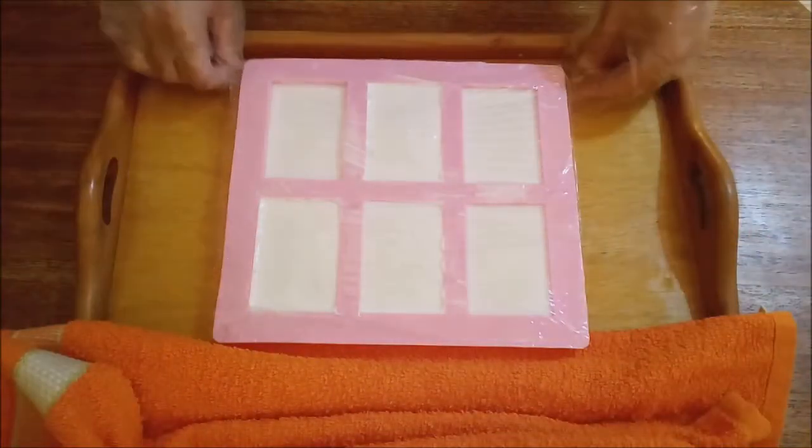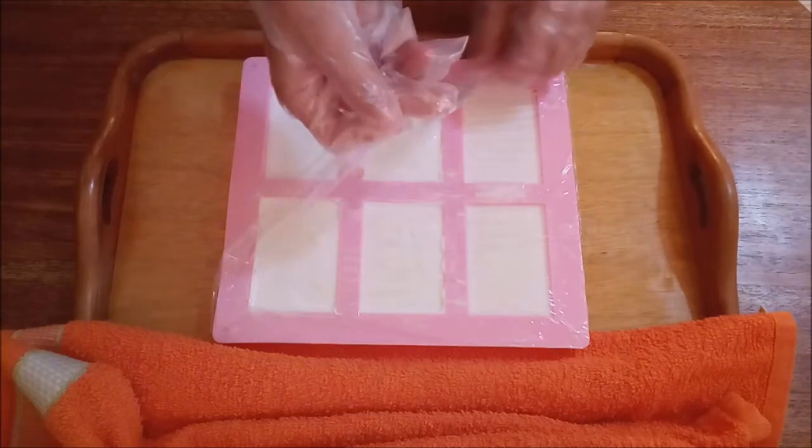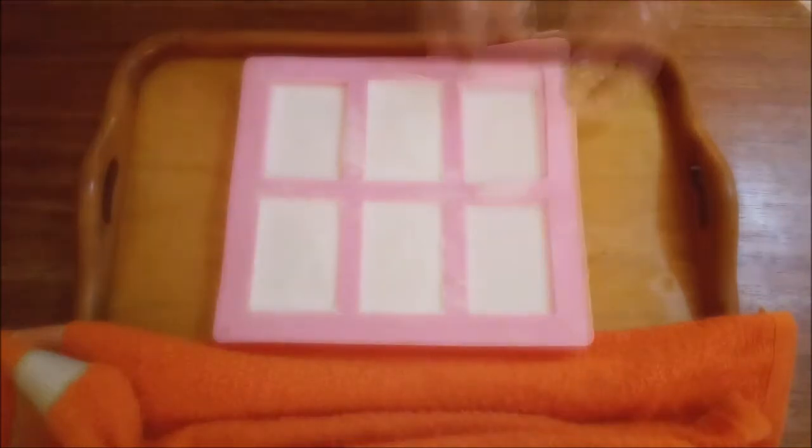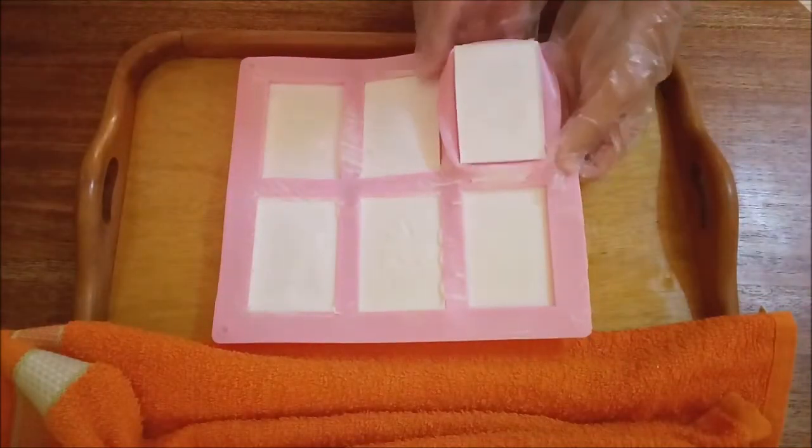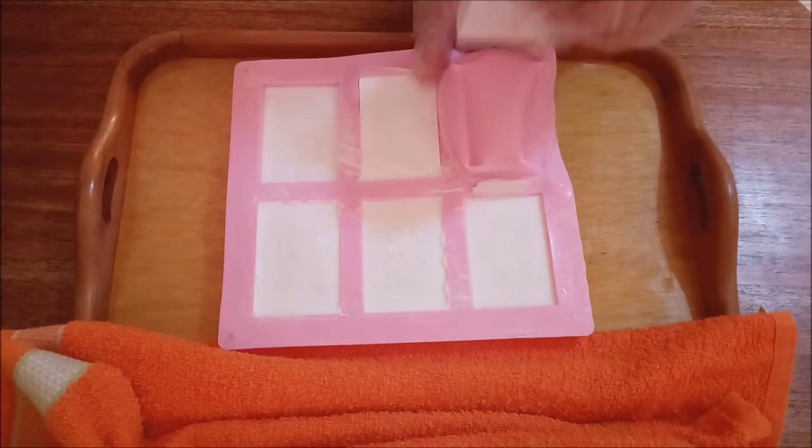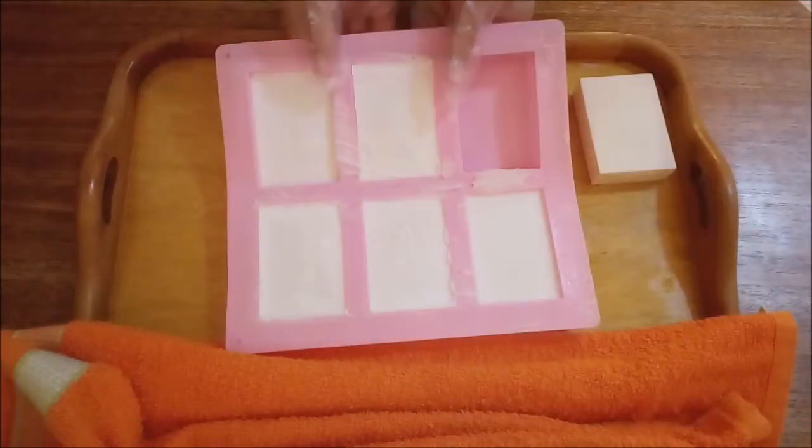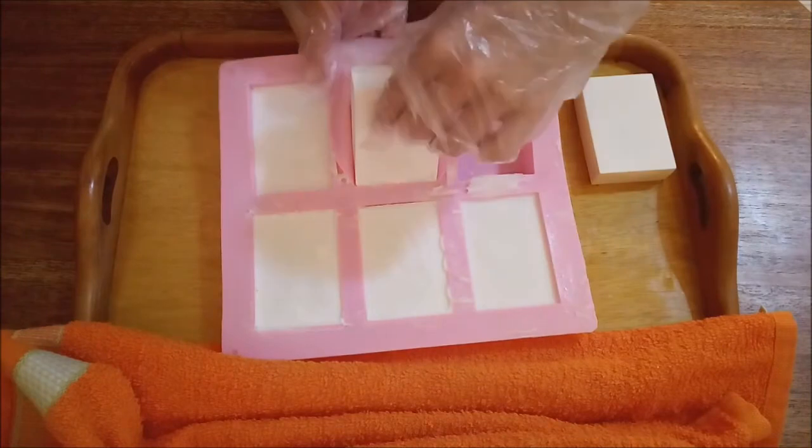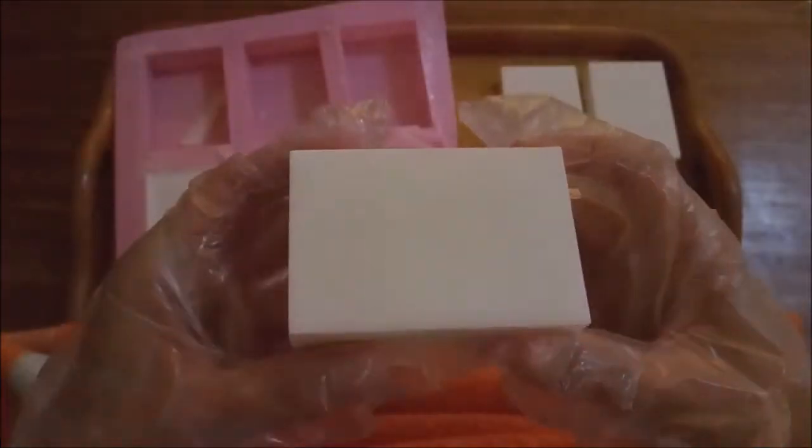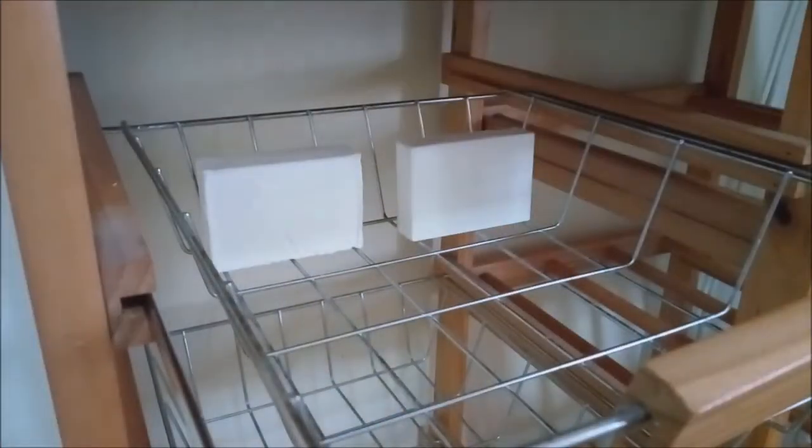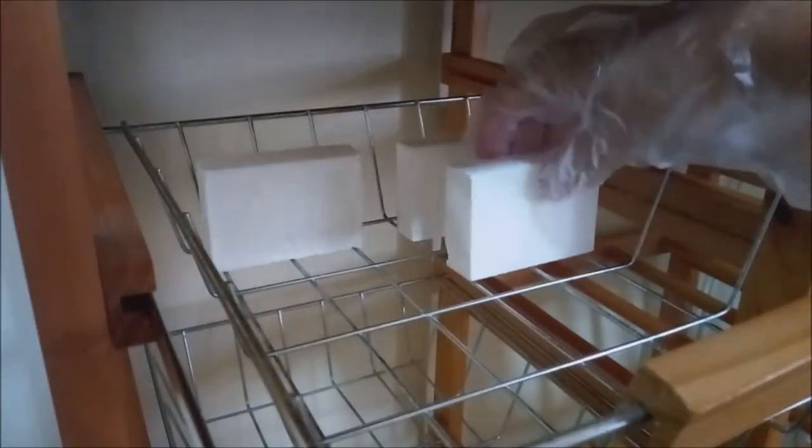After 4 hours, unmold. It is advisable to use gloves when unmolding. This recipe will give you about 600 grams of soap. The weight will always vary after the cure. The cure is the time required for soap to lose water and stabilize the pH. In the case of 100% coconut soap for cleaning, the curing time is 4 weeks. During the 4 weeks of curing, the bars should be stored in a place without direct sunlight and without humidity. The bars must be rotated so that they can cure evenly.